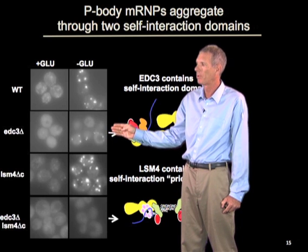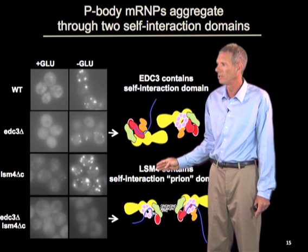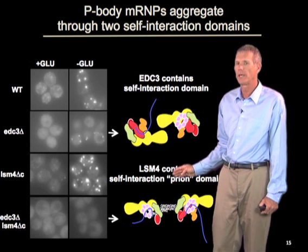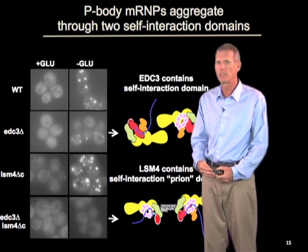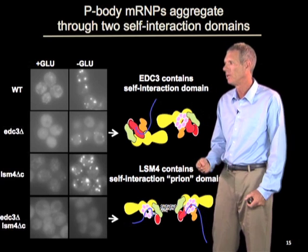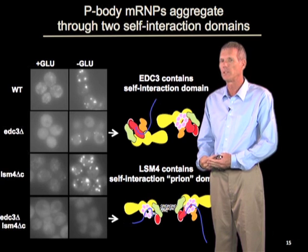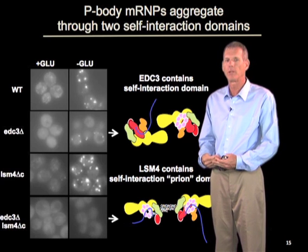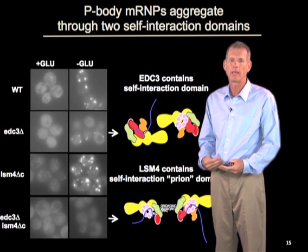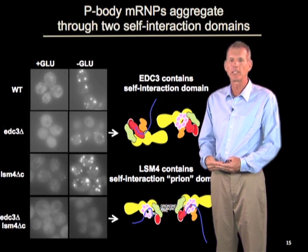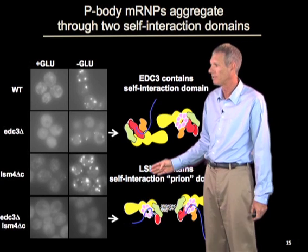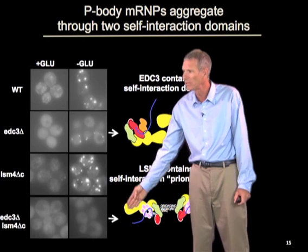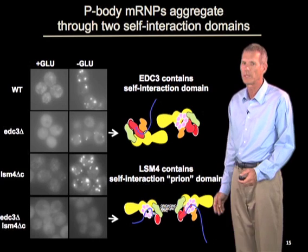The p-bodies that still form in the absence of EDC3 are dependent upon another interaction in the LSM4 protein, which has a C-terminal tail containing what is called a prion domain. A prion domain is analogous to what we think about in mad cow disease or human Kuru disease — it is a self-assembly domain which in disease states can be irreversible. But this is an example where these prion domains form a reversible assembly, so it is not a pathogenic state. If you remove both the EDC3 protein and the prion domain on LSM4, no p-bodies form anymore.